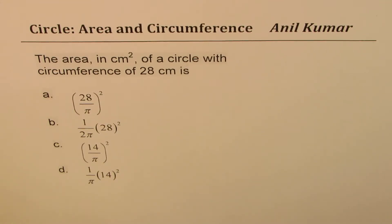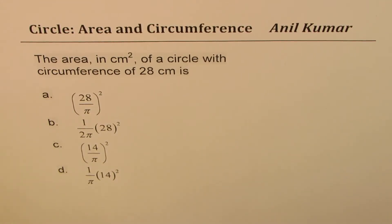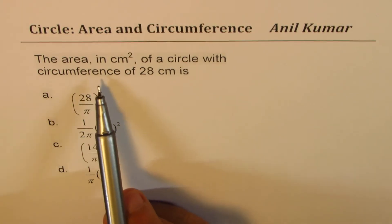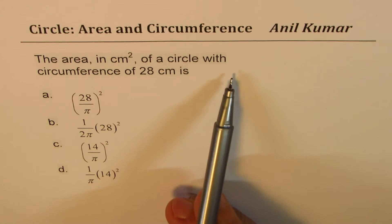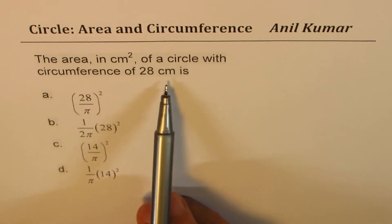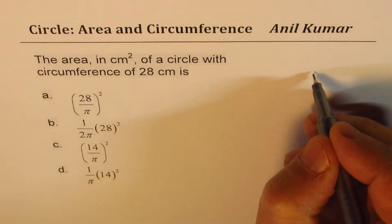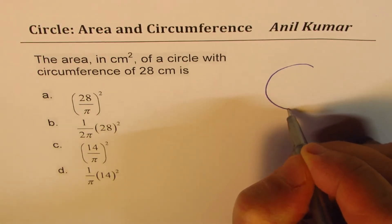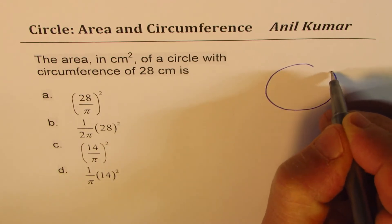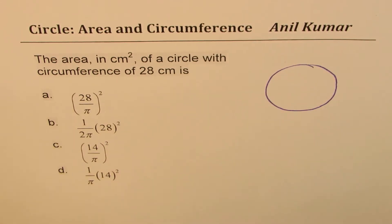I'm Anil Kumar, sharing with you a test question from my subscriber. The question here is: the area in square centimeters of a circle with circumference of 28 centimeters is one of these. You may have to select the correct option. You can always pause the video, answer the question, and then look into my suggestions.